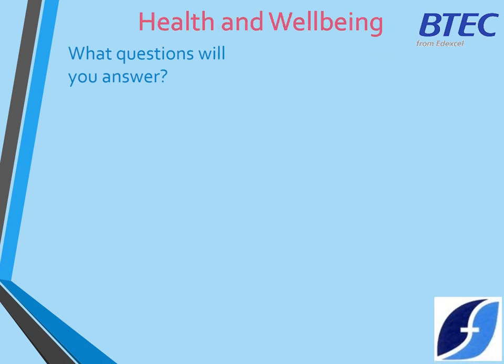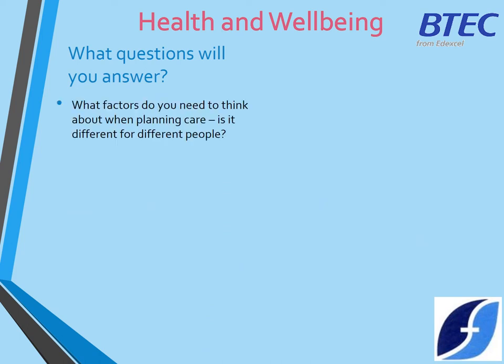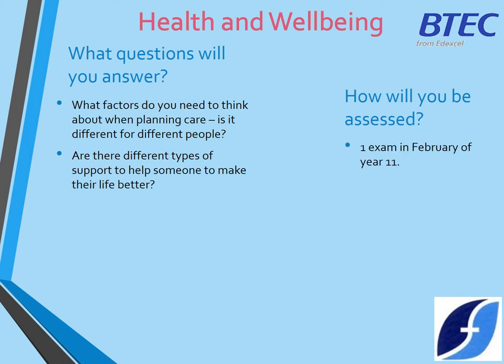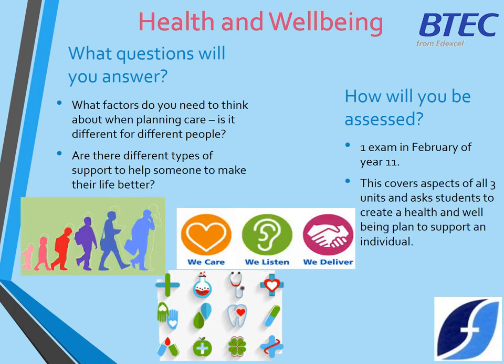The third unit is Health and Wellbeing. Questions to consider here are: what factors do you need to think about when planning care? Will different things be important for different people? Are there different types of support to help someone make their life feel better — and is one type of support better for one person than for somebody else? For this unit, you're assessed through one exam which is two hours long, and you sit that in February of Year 11. The benefit of sitting the exam in February is that you have fewer exams to revise for. This unit covers aspects from all three units, so some information from the first two coursework units is also included within the exam. In the exam, students are asked to create a health and wellbeing plan to support an individual.